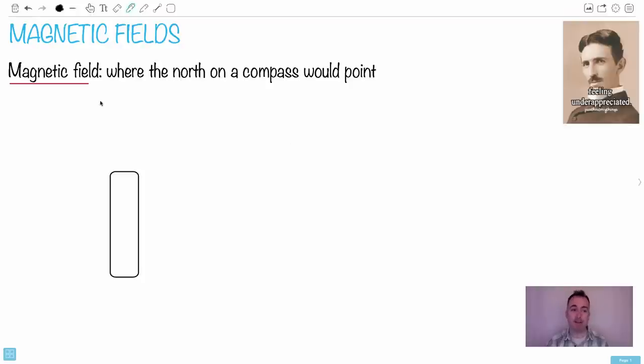So we have magnetic fields and we're going to define the lines that we're going to draw because we're going to learn how to draw magnetic field lines and then we're going to quantify them with some equations. But we define it as a north on a compass, like where it would point.